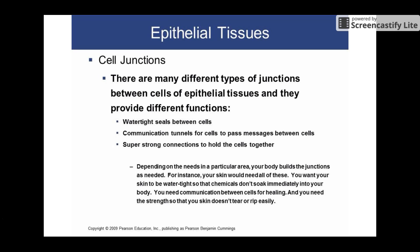One of the cool things to talk about with epithelial tissues is this idea of cell junctions. Because the cells are so tightly packed, they have essentially parts where they join to another cell. Those junctions can have multiple different functions — they can sometimes be like a watertight seal. For instance, the lining of your digestive tract has a nice watertight seal so things don't soak in by themselves; we actually choose what we want to take in.